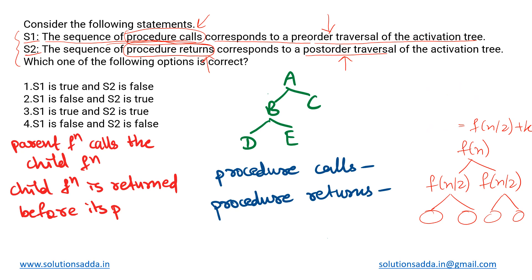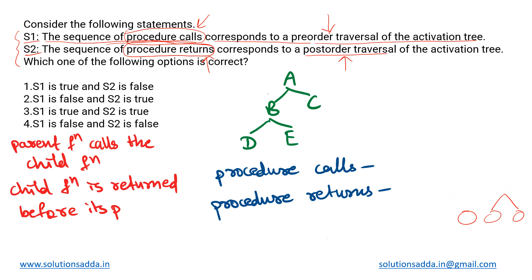For example, we have considered this particular activation tree here. We are not actually concerned with what exactly it corresponds to or which recursive function it belongs to. We simply have an activation tree and we will identify the sequence in which the procedures are called and returned. For that, there are these two statements that we need to consider.